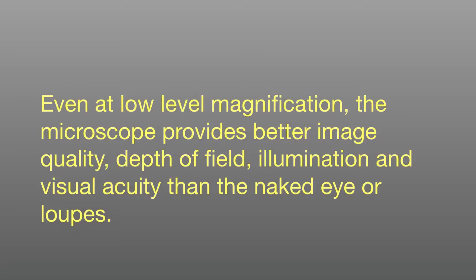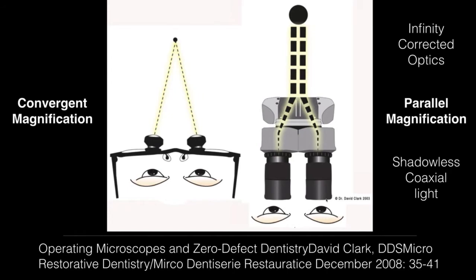Even at low level magnification, the microscope provides better image quality, depth of field, illumination, and visual acuity than the naked eye or loops. Your eyes are further away from the image with loops than with the microscope. With loops, your eyes have to converge on one image. With the microscope, your eyes are not only closer to the optics, but each eye is looking at its own image through parallel magnification. And finally, the lens is closer to the subject.